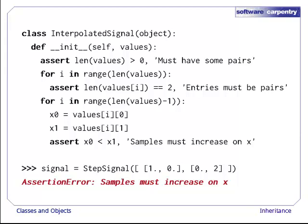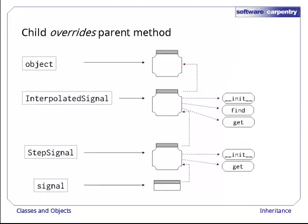One other thing we've done here deserves mention. As this diagram shows, we have defined a method called get in two places, once in the parent class interpolated signal and once in the child class step signal. The one in the parent raises an exception every time it's called, but that's okay. If we start with an object signal of class step signal and follow the references upward, we find step signal's get first and call that just as we want to. When this happens, we say that the child class is overriding the method in the parent class. It's defining a method with the same name, which takes precedence over the parent's.